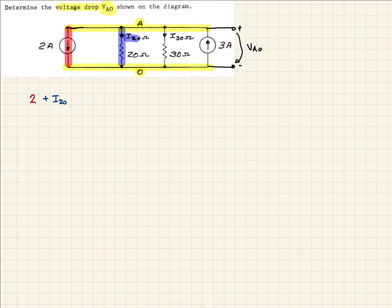Let's look at our next branch. It'll be this guy here. They've already defined a current for us, I-30, because it's a 30-ohm resistor. We're assuming it's leaving as well. So we'll say plus I-30.